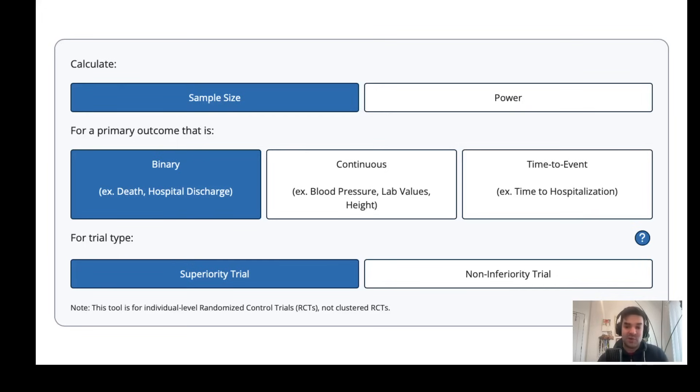If you're doing a cohort study, you can still use this power calculator. It will give you an accurate estimate of the sample size. And for a cohort study, you could just select superiority trial. Next slide.